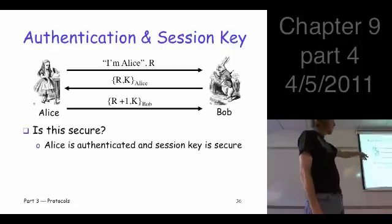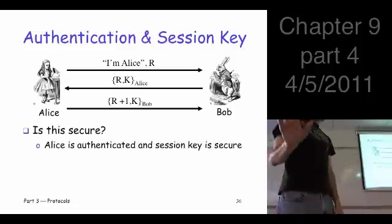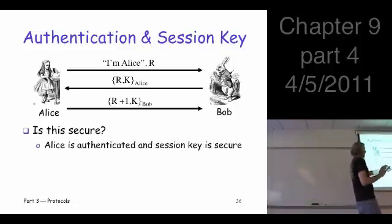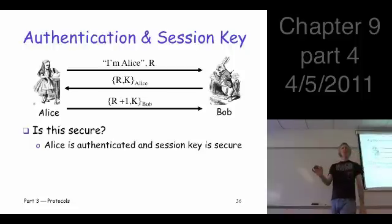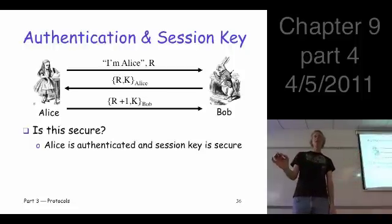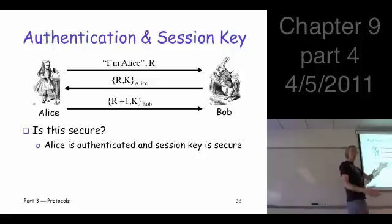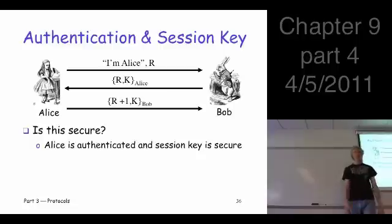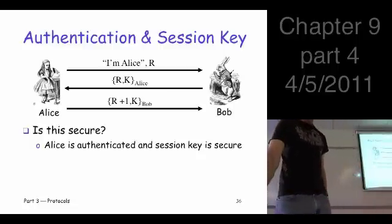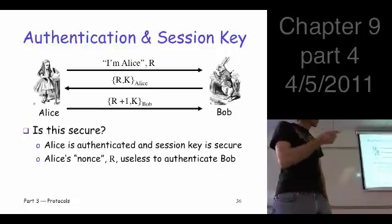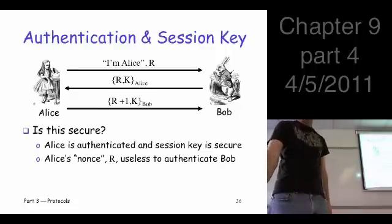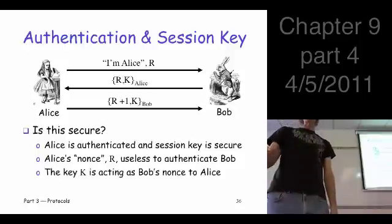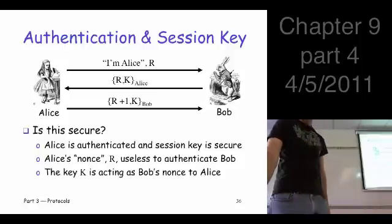So we do authenticate Alice. And since we have a session key, you should also ask yourself, is the session key secure? Can Trudy get the session key? Well, the crypto's strong, right? We assume that. It's encrypted. Trudy can't get it here. It's encrypted. It looks good. Trudy cannot get the session key. So we're good to go there. So we don't authenticate the Bob. We do authenticate Alice. Session key is good. The nonce really doesn't serve any purpose here. It's just kind of a red herring.